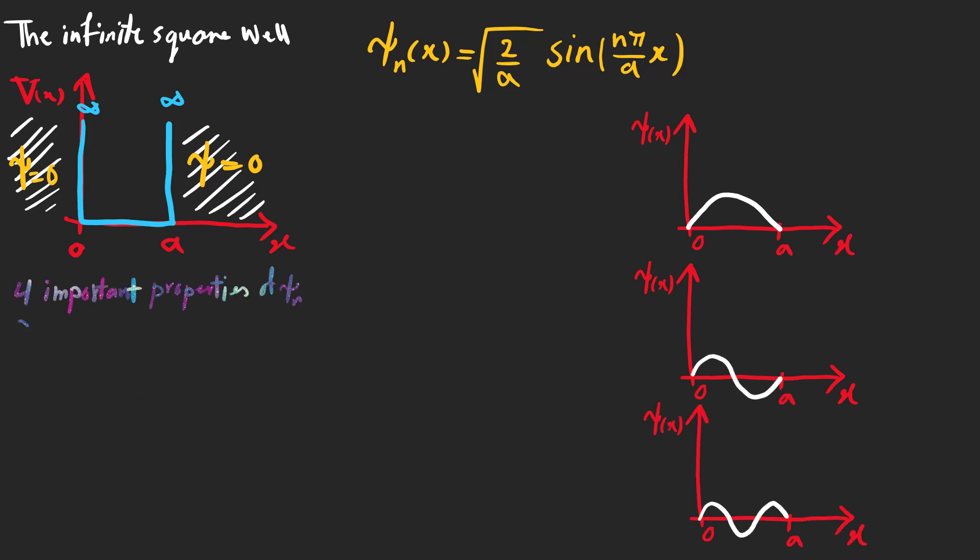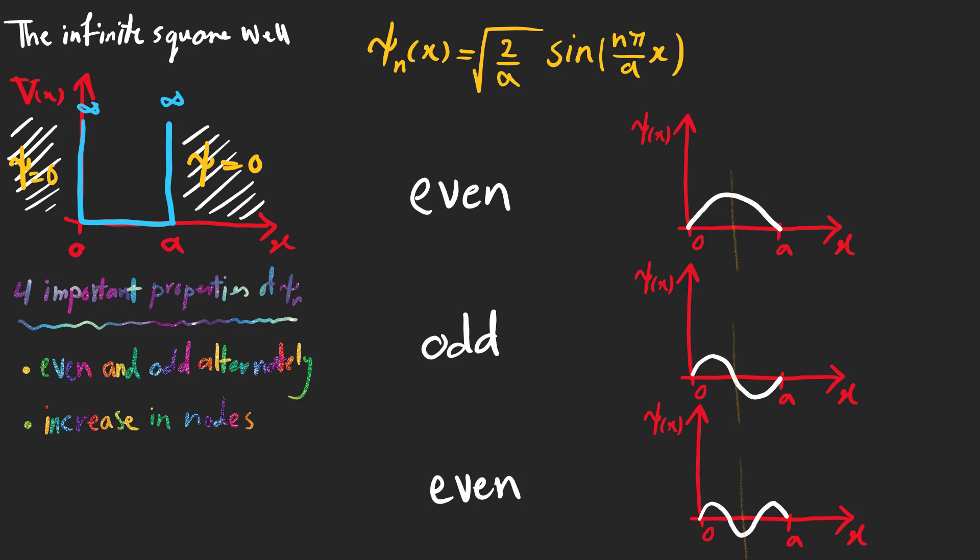We are going to talk about four important properties of these wave functions. First, these functions are alternately even and odd with respect to the center of the well. The second property is that the higher you go in energy, the more nodes you have. The ground state has no nodes. The next one has one node and the second excited state has two nodes and so on.